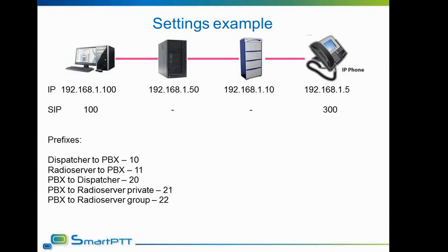To make things clear, let's take an example of setting up a phone system for SmartPTT step by step. Some system organization information will not be given and needs to be figured out or requested from the provider. In this case, we will presume that all needed information is known. We are supposed to know the IP addresses map of the network. Here, the network is organized in the 192.168.1.x segment. Addresses will be: 100 for dispatcher, 50 for radio server, 10 for PBX, and 5 for the phone.